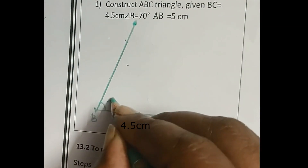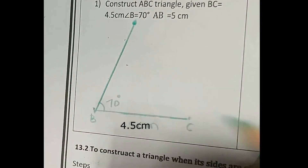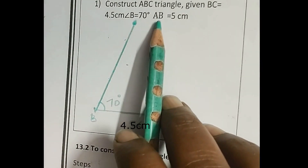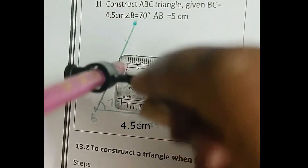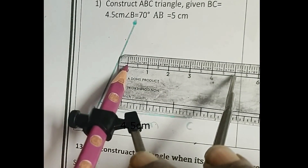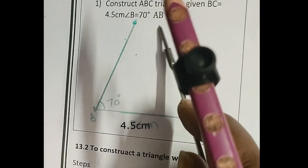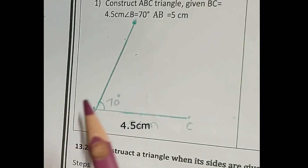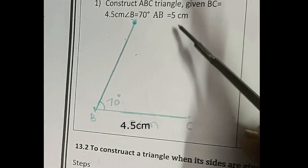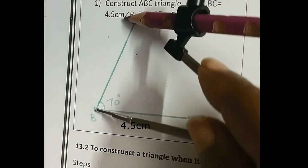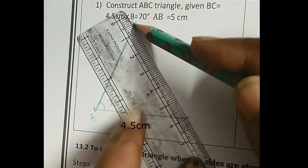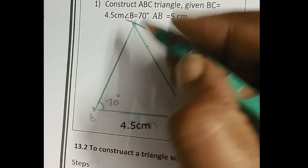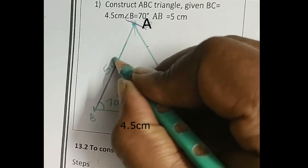We mark at 70 and join these two points. We write 70 degrees. Next we have to draw AB of 5 cm. We take 5 cm in the compass. AB is given, so A is not there yet. We keep the compass on B and draw one arc. From this arc we draw a line to C, and this line is 5 cm. This is triangle ABC.